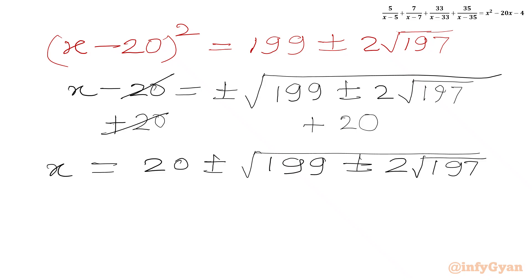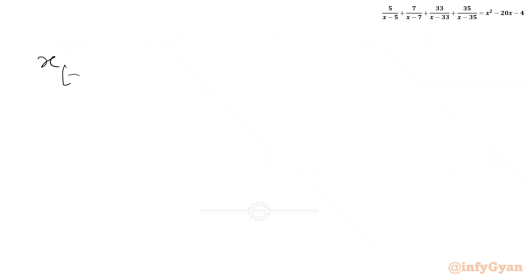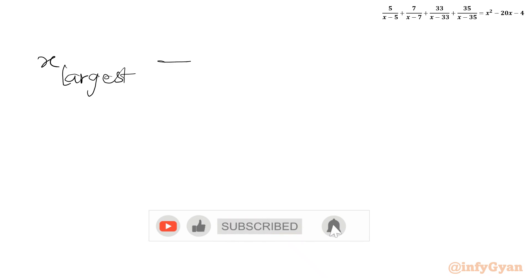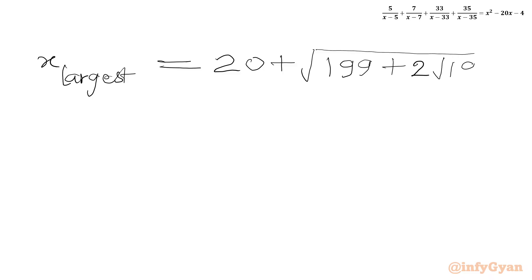So in total we have 6 solutions: x₁ equals 0, x₂ equals 20, and x₃, x₄, x₅, x₆ from the four combinations of plus or minus. To find the largest root, we pick the one with all positive signs. So the final answer is: x largest equals 20 plus square root of (199 plus 2 times square root of 197). This is our final answer.